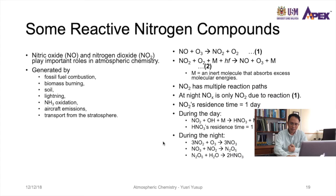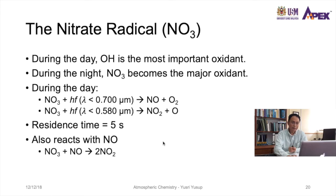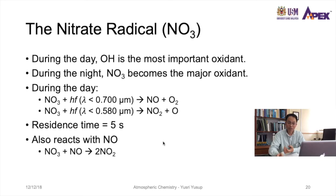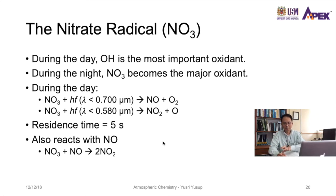Regarding the nitrate radical NO₃: during the day, OH is the most important oxidant for nitrogen compounds. But at night, NO₃ becomes the major oxidant due to the lack of OH. During the day, NO₃ reacts with sunlight at wavelengths less than 0.7 micrometers to form NO and O₂, or at wavelengths less than 0.58 micrometers to form NO₂ plus an oxygen atom. The nitrate radical has a residence time of only 5 seconds — though still not as reactive as OH. NO₃ also reacts with NO to form NO₂.